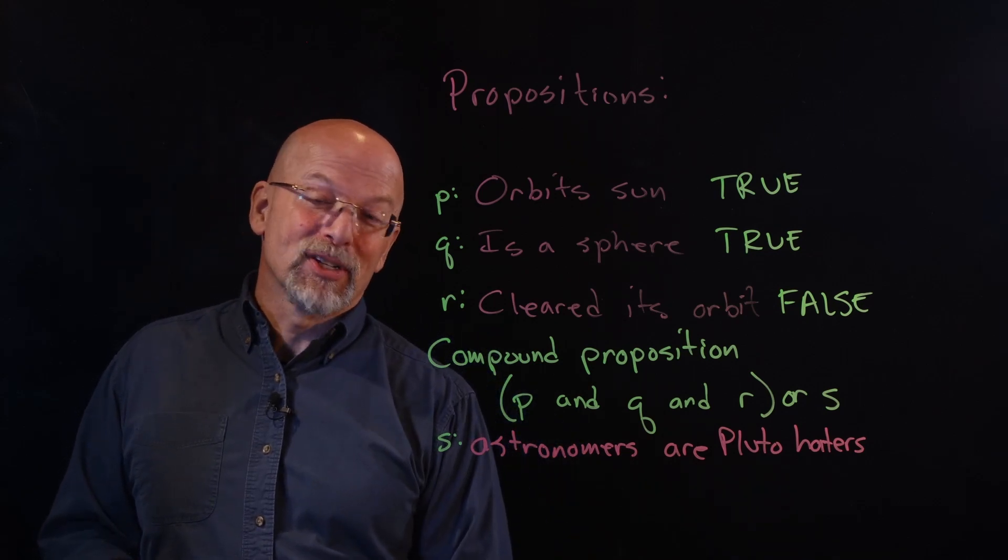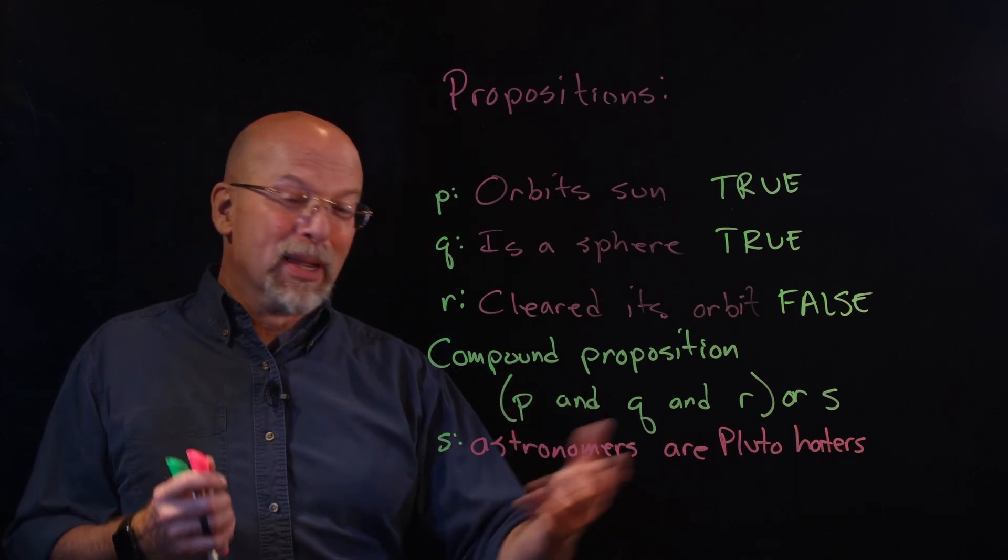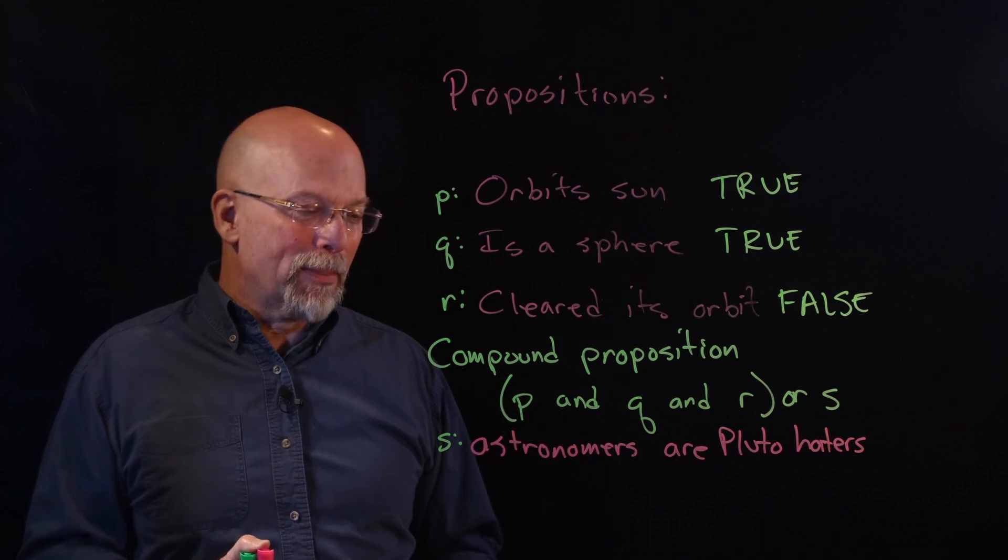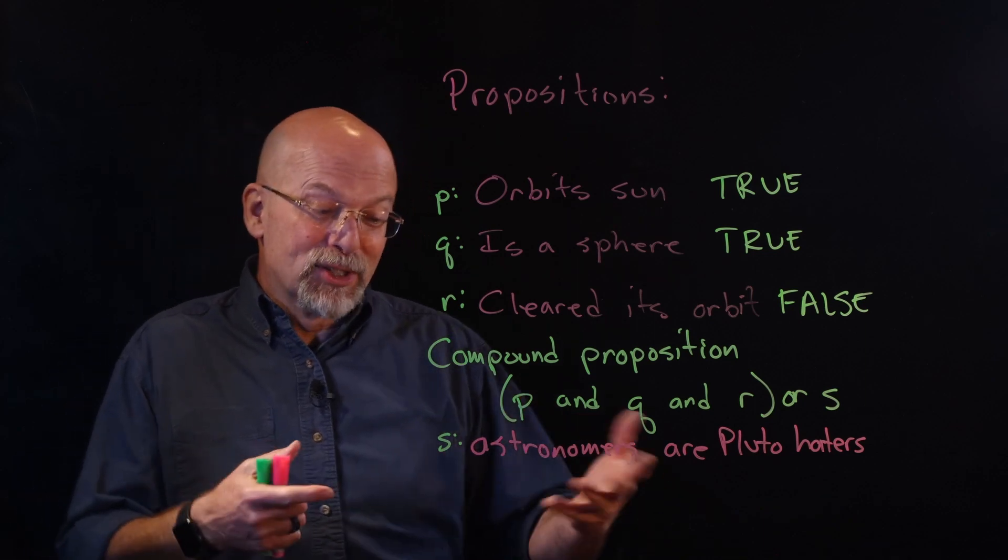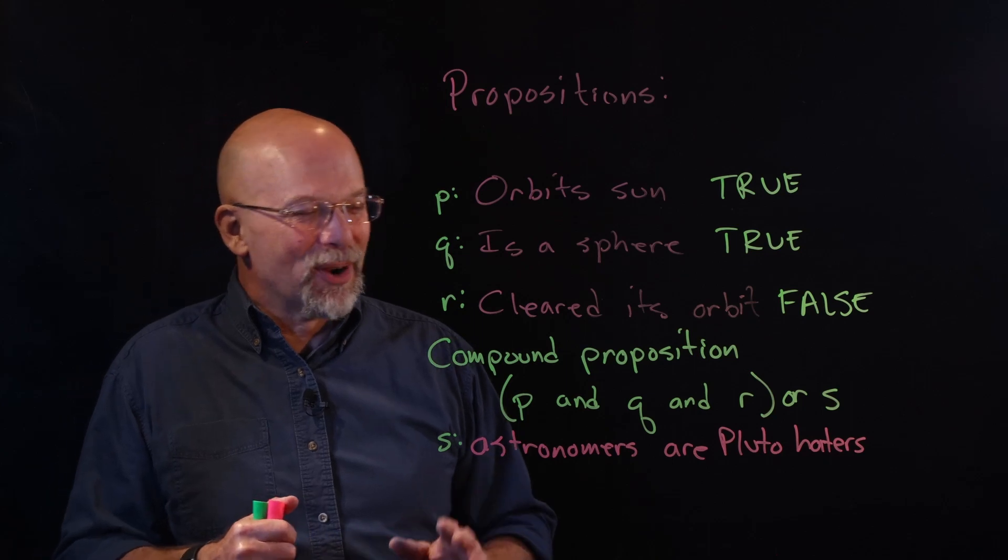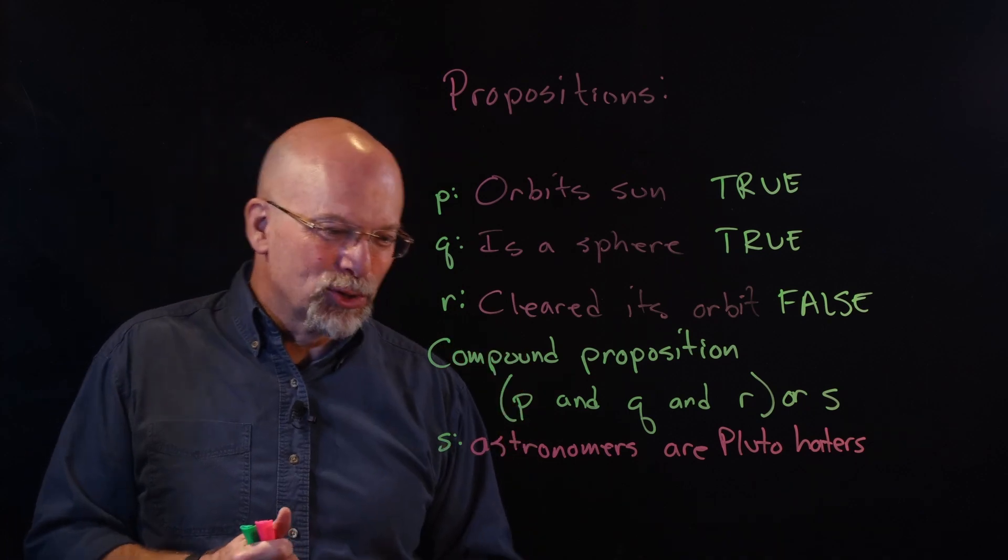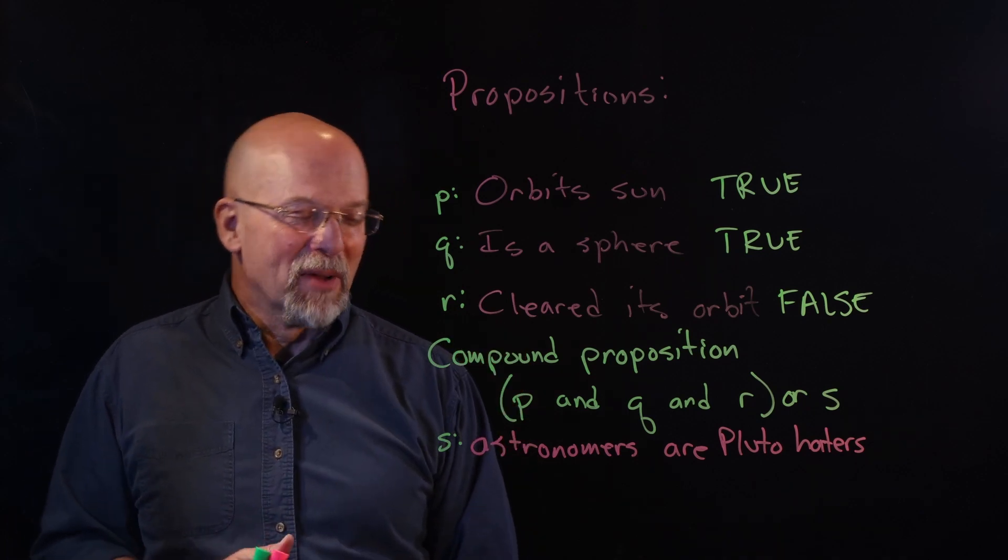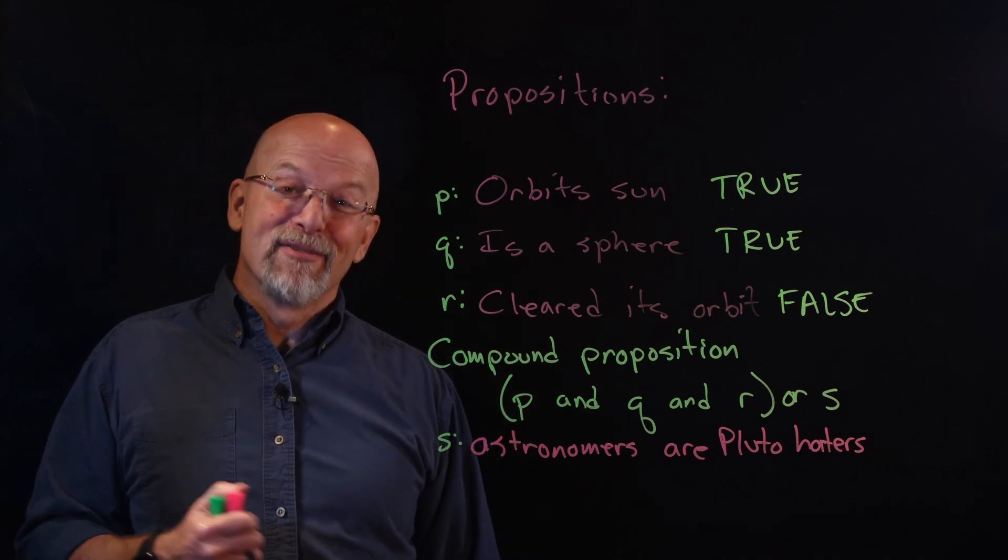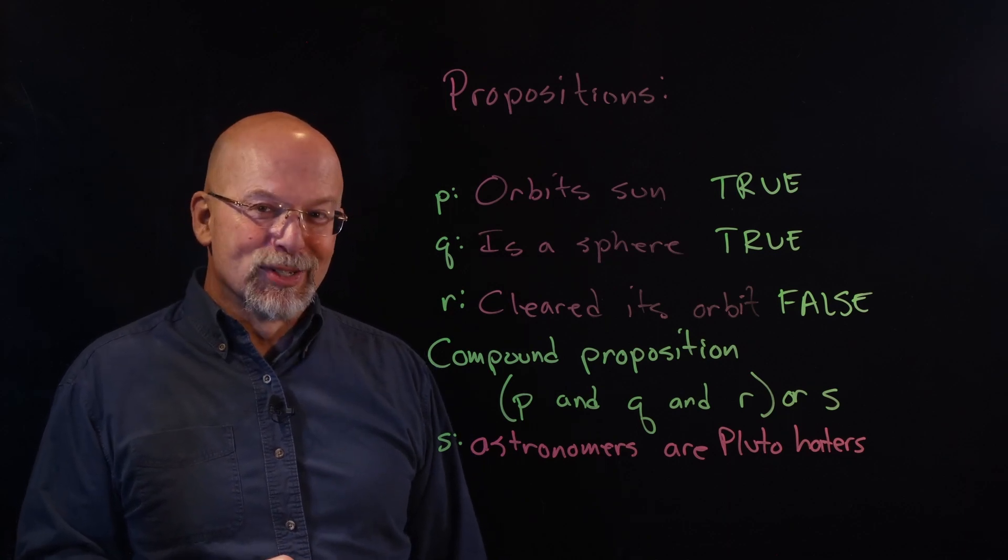There's a significant problem with this. It turns out that astronomers are Pluto haters is not a proposition. Why? Because you can't answer it with a true or false. Some astronomers may be Pluto haters, but there are definitely some astronomers that are not. So you can't definitively say that that is a true or false statement. I guess I'm just going to have to get used to my very eager mother just served us nachos. That just doesn't do it for me.